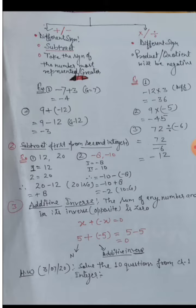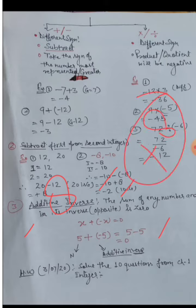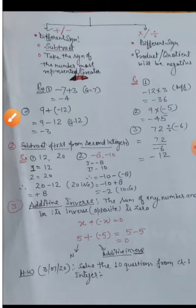The sum of any number and its inverse is zero, so that number is the additive inverse of the given number. What is the additive inverse of minus 8? The opposite of minus 8 is plus 8, so plus 8 is the additive inverse of minus 8. The additive inverse of 0 is 0, since zero is neither positive nor negative. The additive inverse of minus 5 is plus 5.